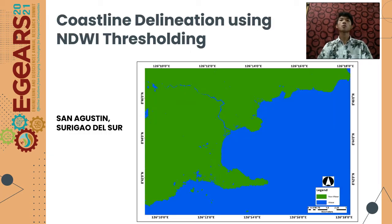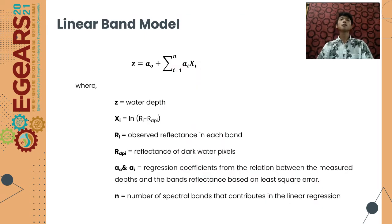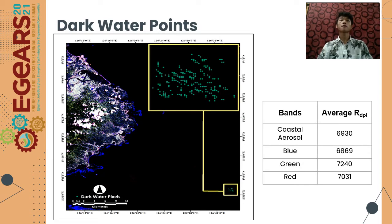The Normalized Difference Water Index or NDWI thresholding was performed to automate the delineation of the coastline. The linear band model by Lyzenga was used to estimate the bathymetry of San Agustin. The formula is: Z equals A sub 0 plus the summation from i to n of A sub i times X sub i, where Z is the water depth. X sub i equals the natural logarithm of R sub i minus R sub dpi, where R sub i is the observed reflectance in each band and R sub dpi is the reflectance of dark water pixels. A sub 0 and A sub i are the regression coefficients from the relation between measured depths and band reflectance based on least square error. N is the number of spectral bands contributing to the linear regression. The R sub dpi values represent the reflectance of deep-water pixels where light can no longer penetrate the water column; 200 dark water pixel points were created and the average was used as R sub dpi.